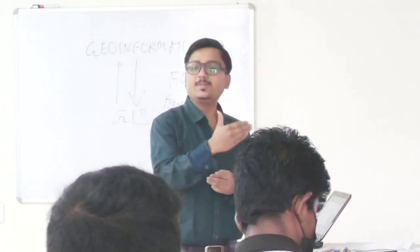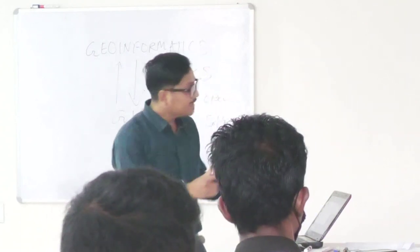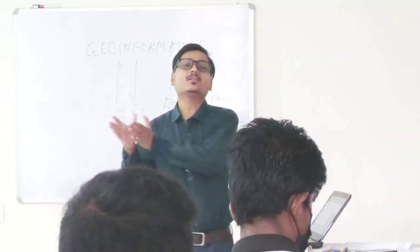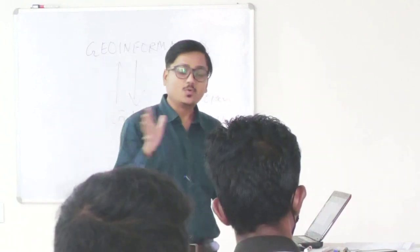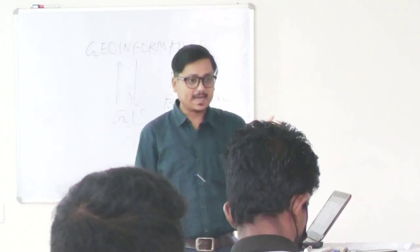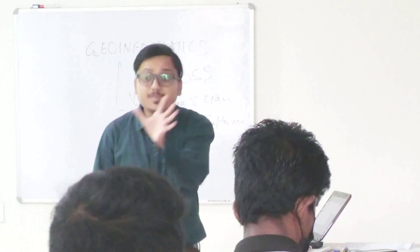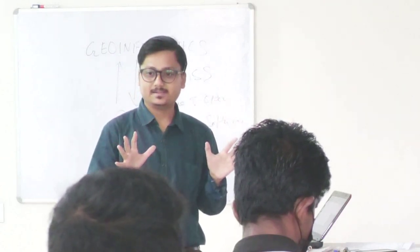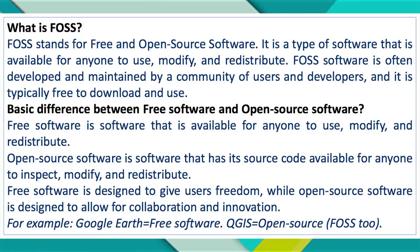What is the basic difference? All open source software or data are free, but all free data or free software may not be open source — that is the difference. So in GIS also, we have free software and data, as well as free and open source software and data. For example, Google Earth is a free software provided by Google, but it is not open source. Quantum GIS or QGIS is very popular GIS software that is open source and also free — that is a FOSS software.